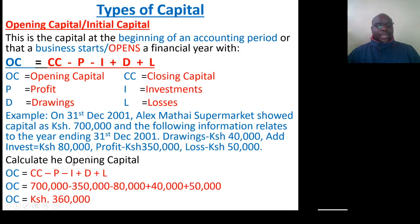We look for opening capital. Opening capital equals closing capital, less profits, less additional investments, plus drawings, plus losses. So: 700,000 closing capital, less 350,000 profit, less 80,000 additional investments, plus 40,000 drawings, plus 50,000 losses. Our opening capital will be 360,000.